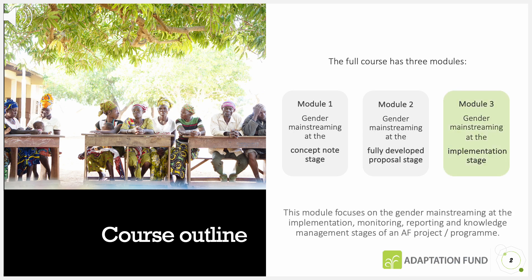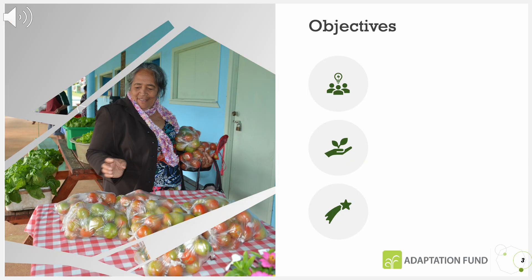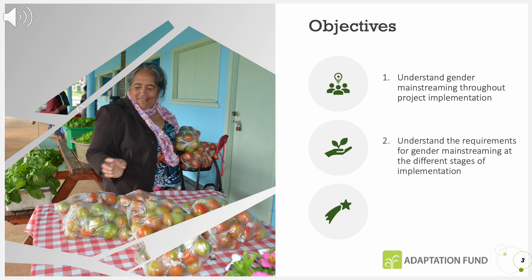This module focuses on gender mainstreaming at the implementation, monitoring and knowledge management stages. The objectives of the module are to understand gender mainstreaming throughout project implementation, understand the requirements for gender mainstreaming at the different stages of implementation, and know how to share and support others through knowledge management.